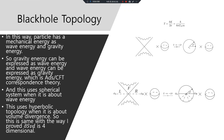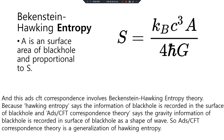Black hole topology. In this way, a particle has mechanical energy as wave energy and gravity energy. So gravity energy can be expressed as wave energy and gravity energy, which is ADCFT Correspondence Theory. This uses a spherical system when it is about wave energy, and hyperbolic topology when it is about volume divergence. This is the same as the way I proved S3D's four-dimensional. This ADCFT Correspondence Theory involves Beckenstein-Hawking Entropy Theory, because Hawking's entropy says the information of a black hole is recorded in the surface of the black hole. And ADCFT Correspondence Theory says the gravity information of a black hole is recorded in the surface of the black hole as a shape of wave. So ADCFT Correspondence Theory is the generalization of Hawking's entropy.